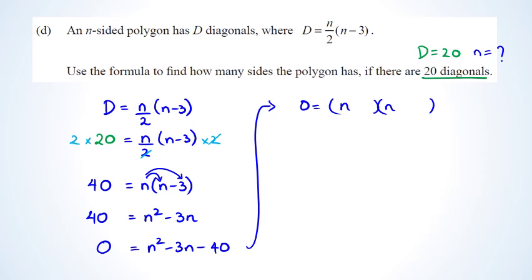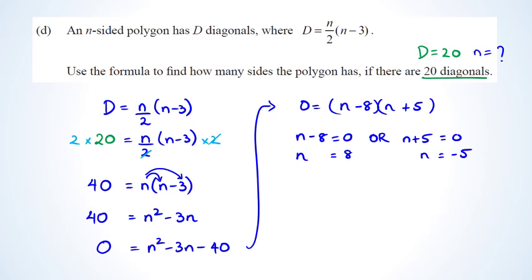Two numbers that multiply to negative 40 and add to negative 3 are negative 8 and positive 5. So 0 equals (N minus 8)(N plus 5). Setting each factor to zero: N minus 8 equals 0 gives N equals 8, and N plus 5 equals 0 gives N equals negative 5.